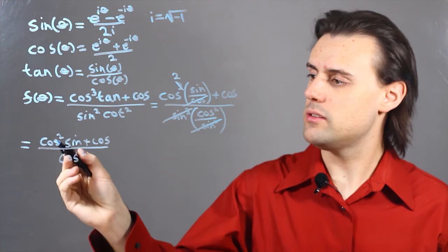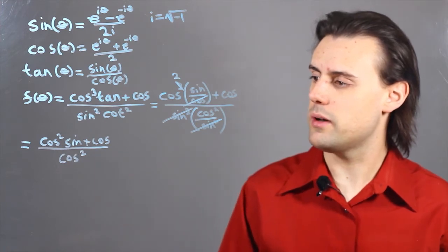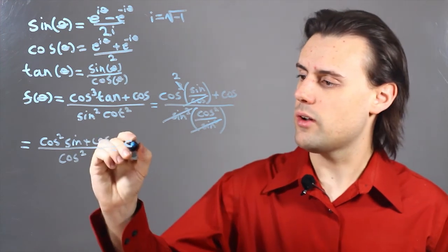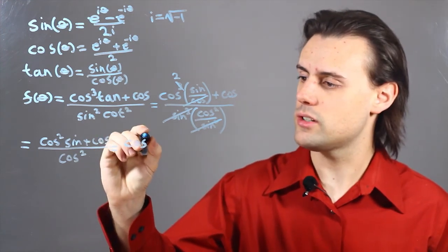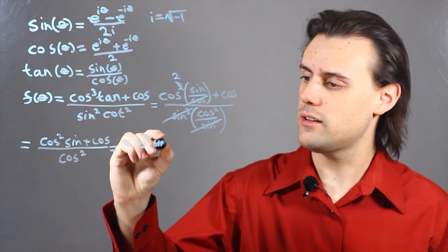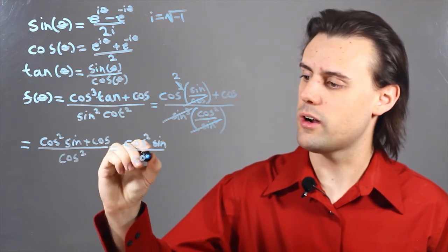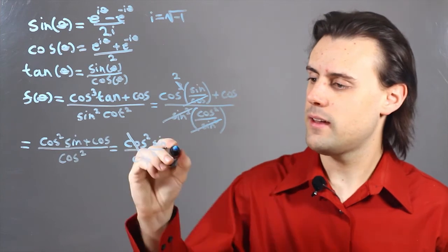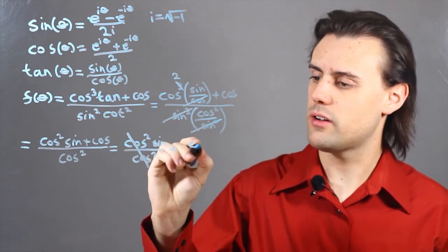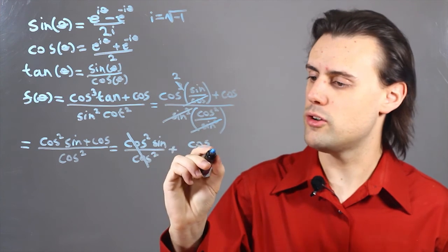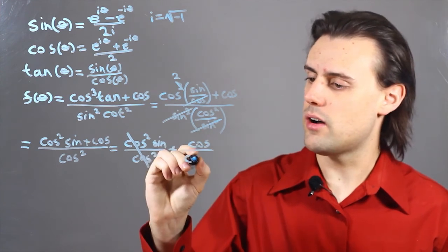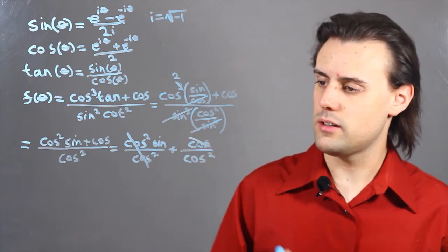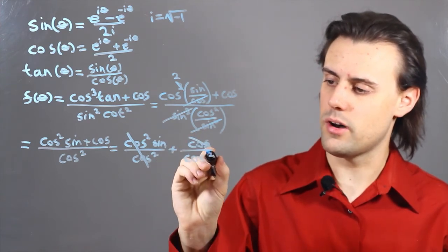The next step is I can simplify this by putting it in terms of two fractions. I have for my first fraction cosine squared sine divided by cosine squared. The cosine squared terms cancel out. Then for the second term, I have cosine from the numerator divided by the common denominator cosine squared, and this cosine cancels out with one of the cosines at the bottom.